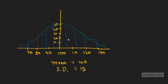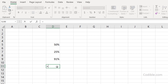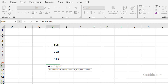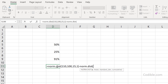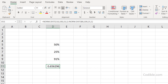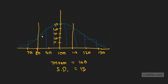Now, what if you want to find the likelihood that the supermarket will sell between 80 and 110 cartons? For that we calculate NORM.DIST(110, 100, 15, 1) minus NORM.DIST(80, 100, 15, 1). That difference gives us about 66 percent — the likelihood that the number of cartons sold is between 80 and 110.